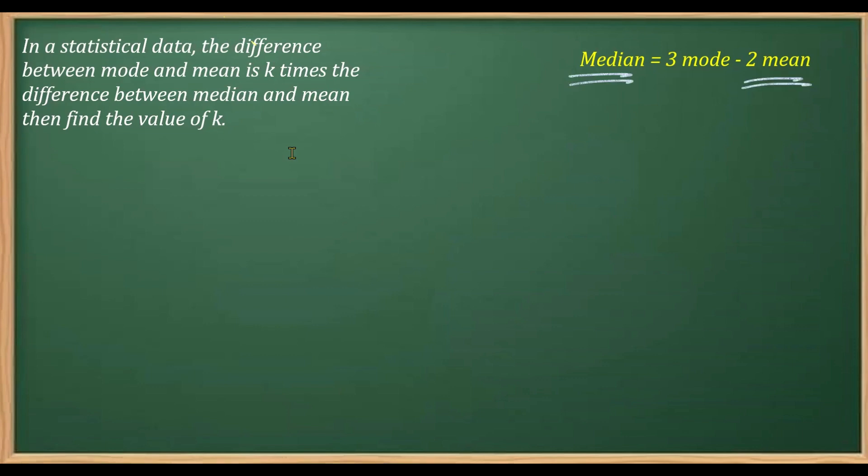You can shuffle the order also depending upon how you have learned. Now if I read the question it says, in a statistical data the difference between the mode and the mean is k times the difference between median and the mean. And what we have to find out is the value of k here.